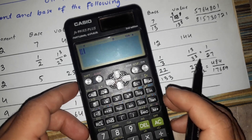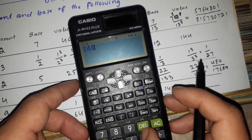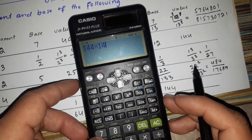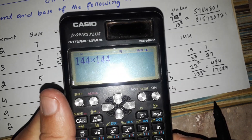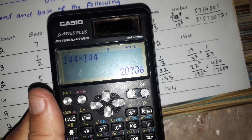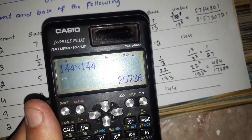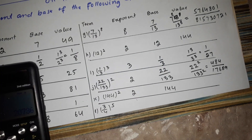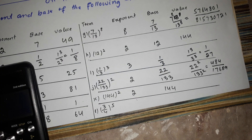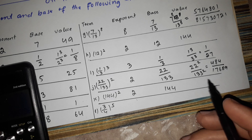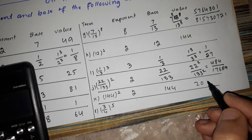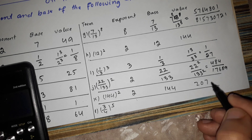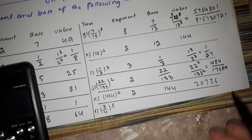144 multiplied by 144, which equals 20,736. So the value is 20,736.